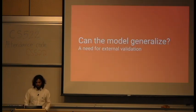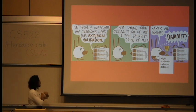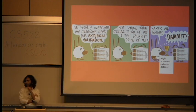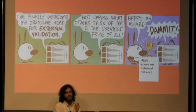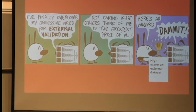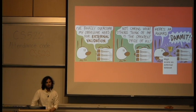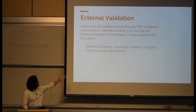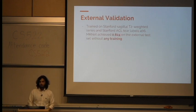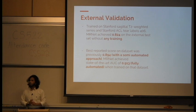I want to talk about external validation. A model that works well on your own data isn't enough — the real test is doing well on an external dataset, because that's what determines whether these medical imaging algorithms are truly generalizable. If a model only works for the hospital where you trained it, it's not useful broadly. We found a dataset from Croatia: different scanner, different sequence, different protocol. The model achieved an AUC of 0.82 without any training on that data. The best score was 0.894, and with a little tweaking we got to 0.913 — fully automated.